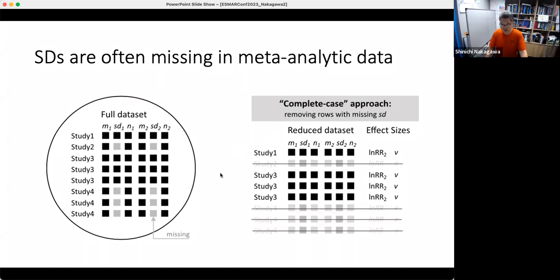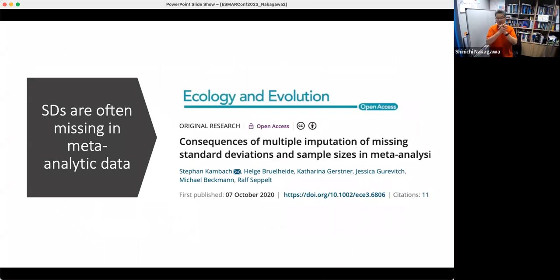So when that happens, what we usually do is just delete those rows or cases, because you can't calculate log response ratio sampling variance. When we delete these cases, it's called the complete cases approach, because we just use the cases where SD are not missing. But this will lead to some biases in overall mean estimate or other meta-analytic parameters.